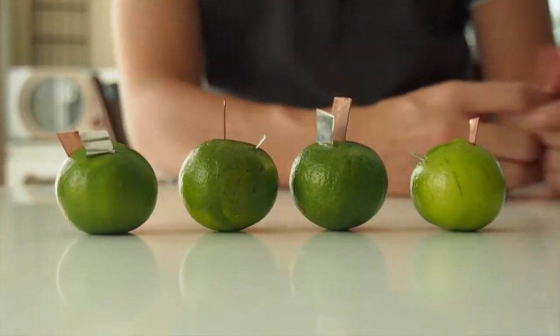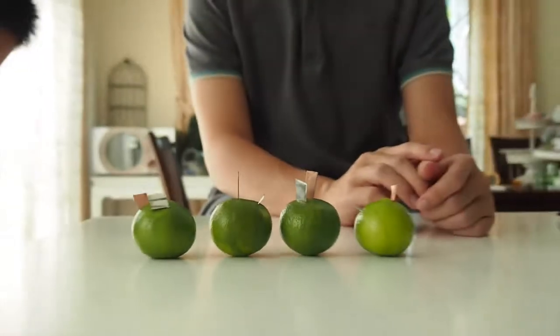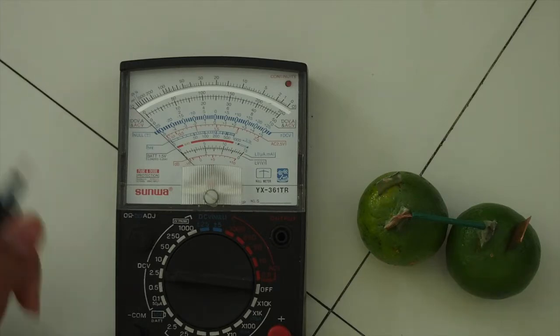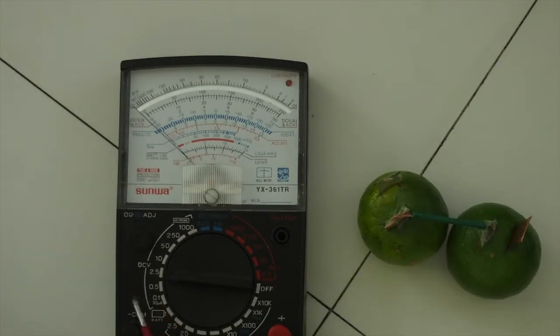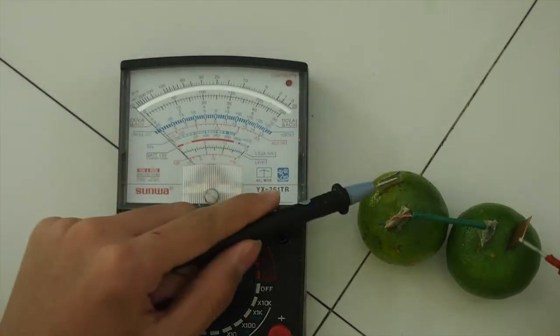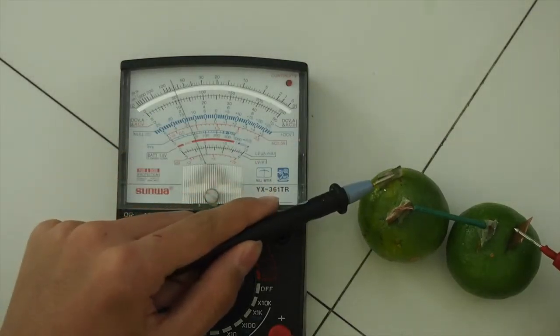And now we are going to connect four limes into series circuits to increase the voltage. Here, we are connecting two limes together as a series circuit. And we are going to check out the voltage. We change the multimeter into 2.5 volts in order that it will not be damaged.